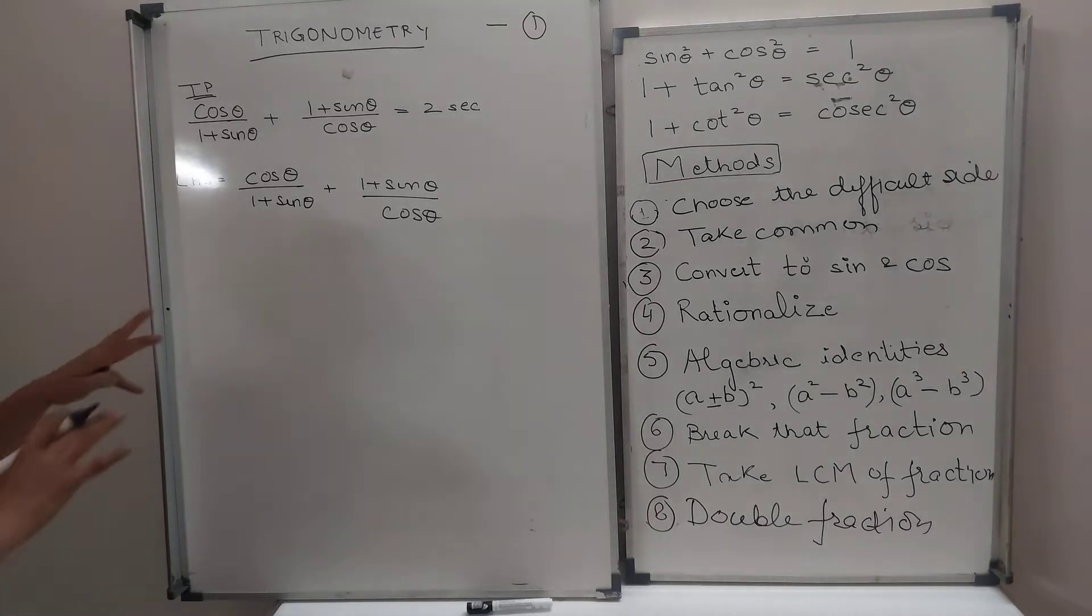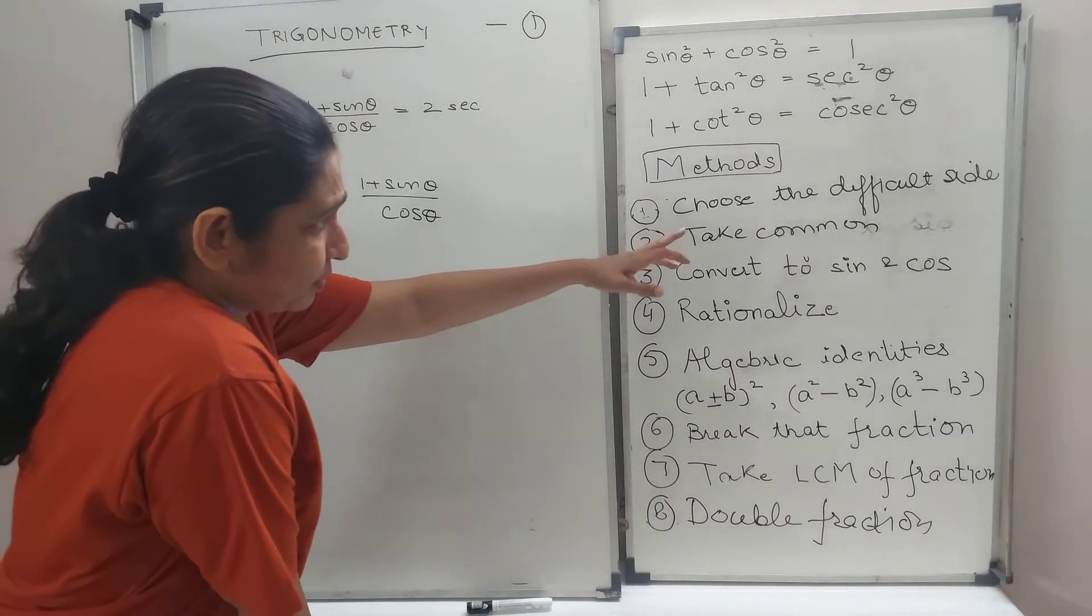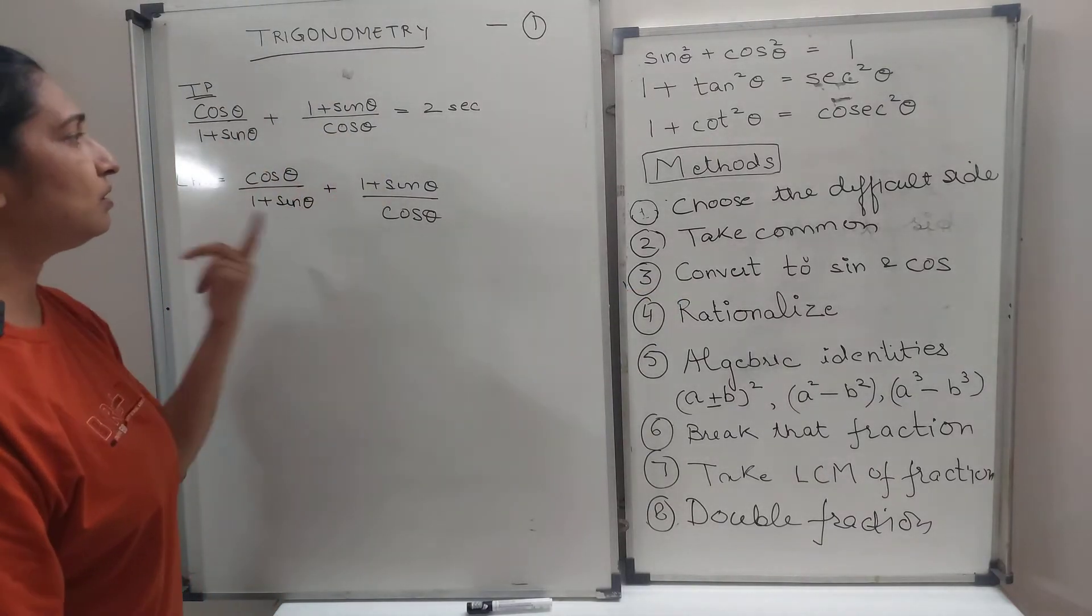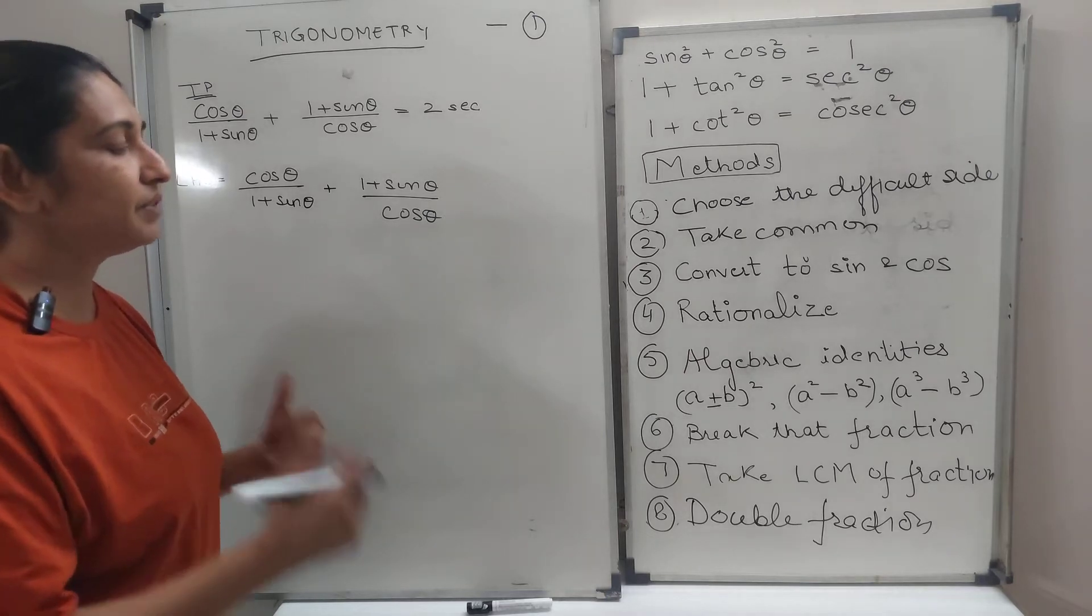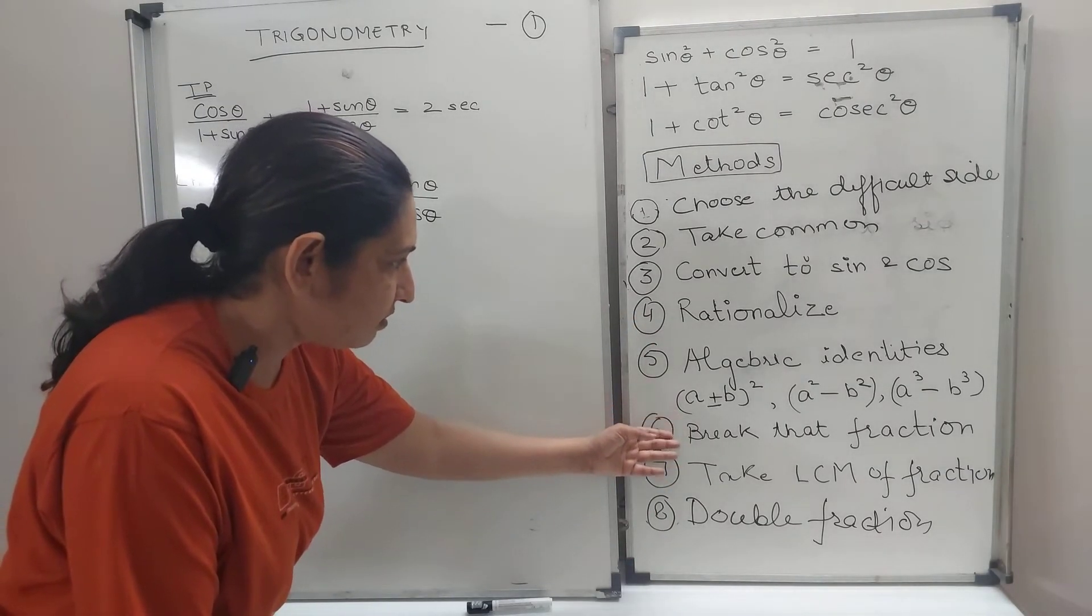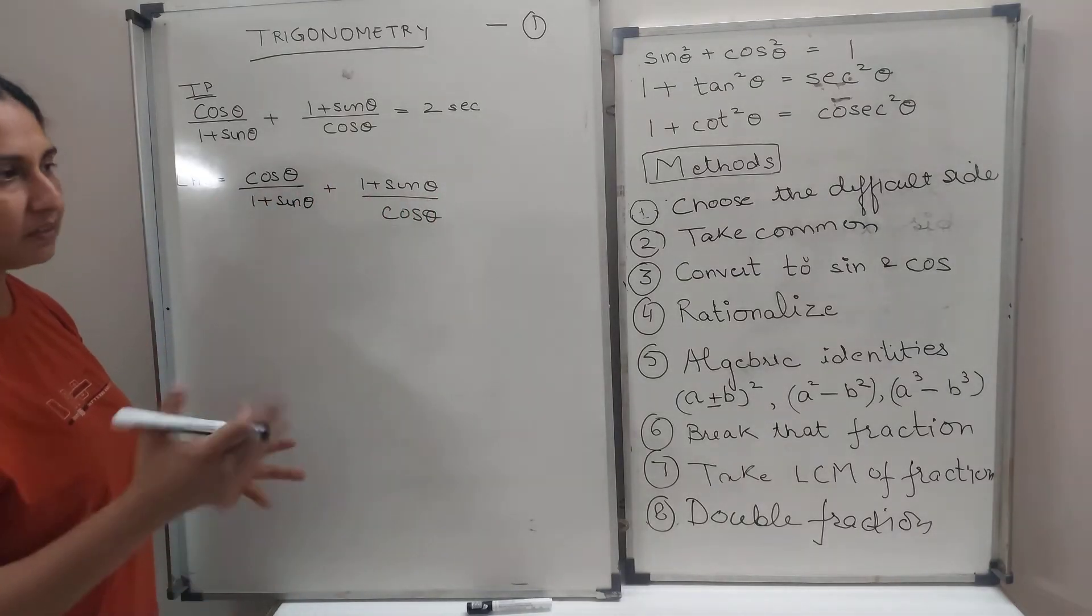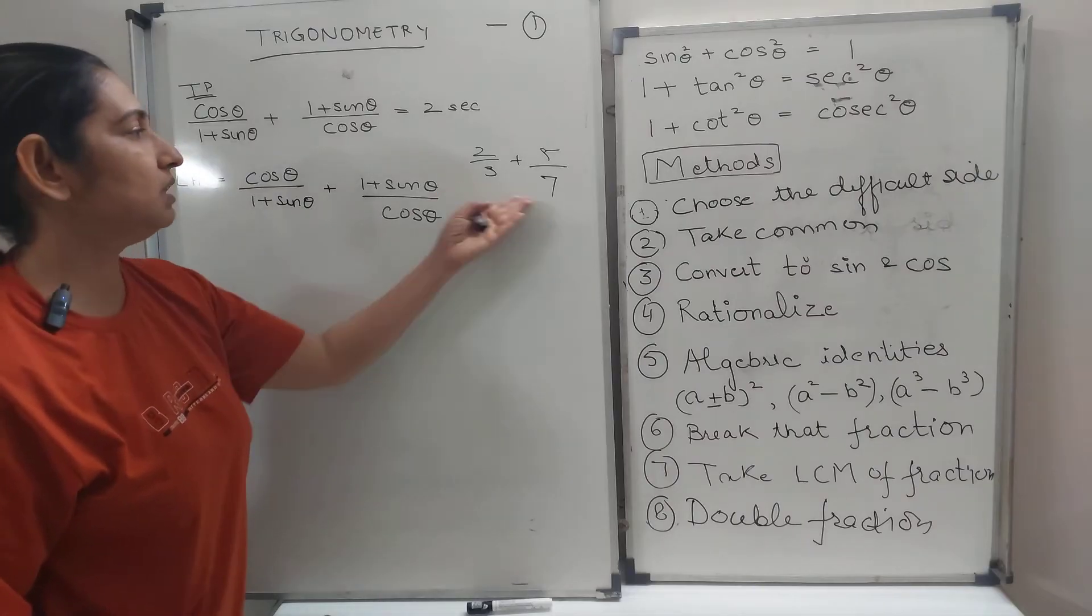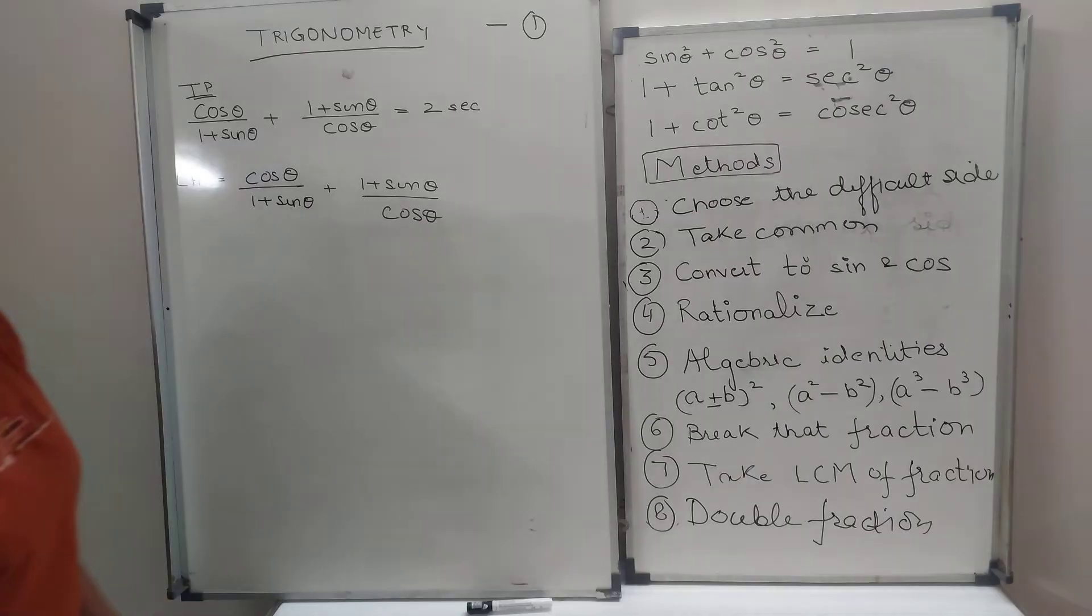Now, what can be the next step? Let's see in our options. Take common, not common here. Convert it into sine and cos. Oh, the things are already into sine and cos. Rationalize. Rationalize, probably I'll take up in a different kind of question. It will not be used here. We can take LCM. See, we have two fractions. And when we have two fractions, suppose we have two by three and five by seven. What do you do with this? We take the LCM and solve the two fractions. That's what we normally do in maths.